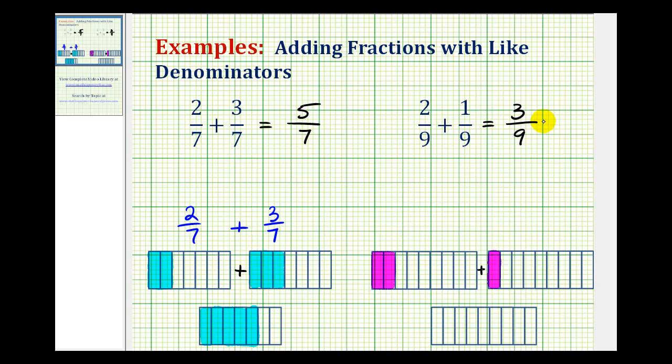To show this, we could write 3 as 1 times 3, and 9 as 3 times 3. In this form, we can see the common factor of 3. 3 over 3 simplifies to 1. Therefore, the sum is equal to 1/3.